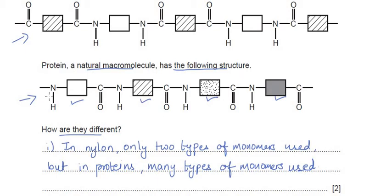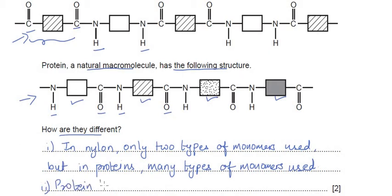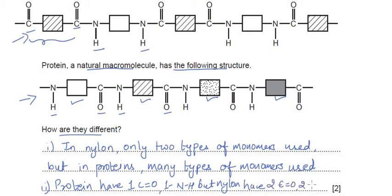The second difference: in nylon each monomer has two CO groups and two NH groups, but in proteins each monomer has one CO and one NH group. So proteins have one CO and one NH group per monomer, but nylon has two CO and two NH functional groups per monomer. Two marks require two differences.